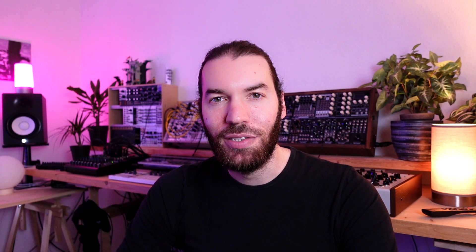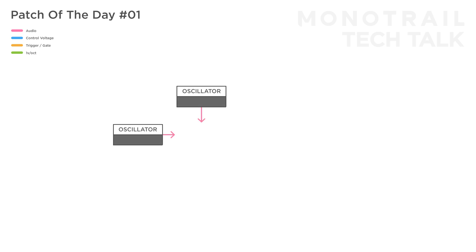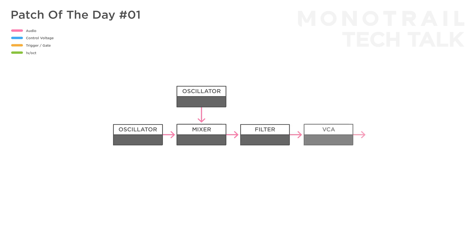If you like a more conceptual layout, here's a flowchart of the same patch. The simple voice is made with two oscillators. The audio is mixed together and sent through a filter. Finally, a VCA is used only to control the volume, because from the VCA the signal is going to an outboard mixer.